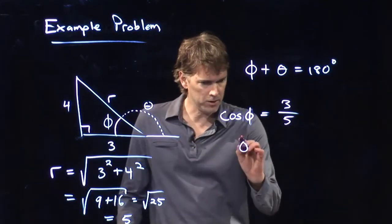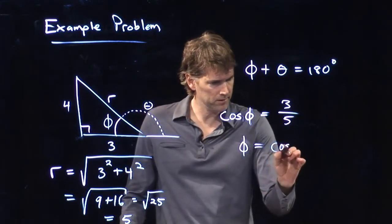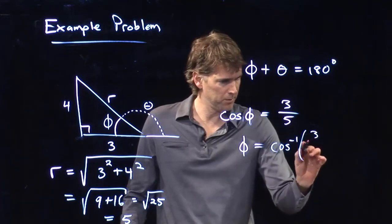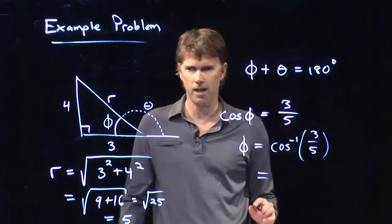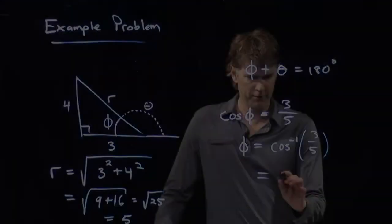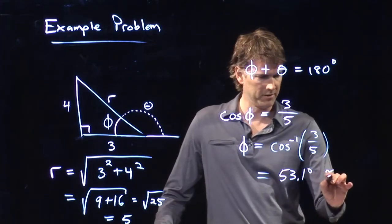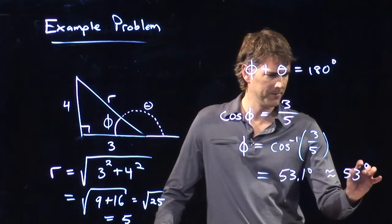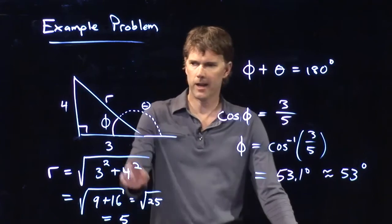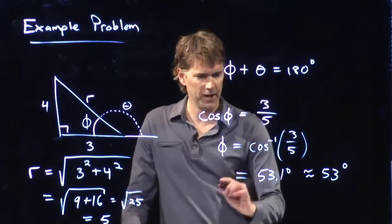All right, so you can plug this into your calculator. Take the arc cosine of 3 over 5, and what do you get? Anybody have their calculator with them? 53.1 degrees. All right, well, let's just call that 53 degrees. And if that angle is 53 degrees, then what does theta have to be?